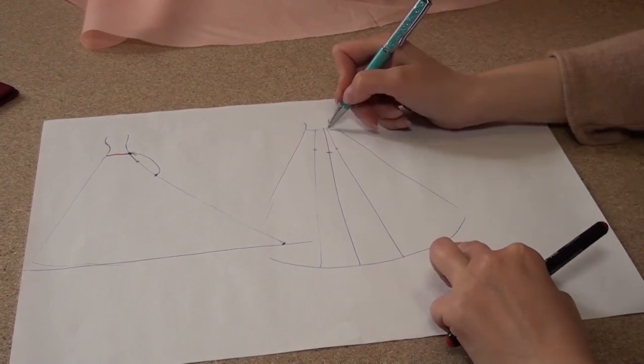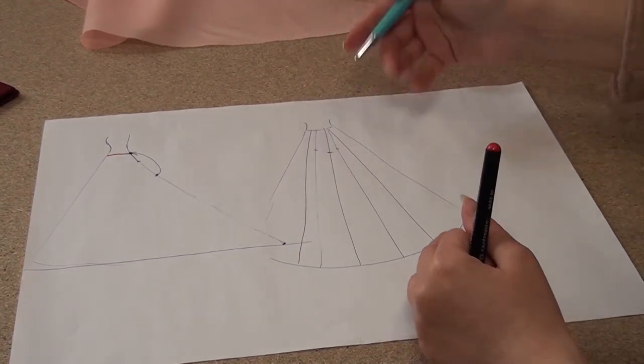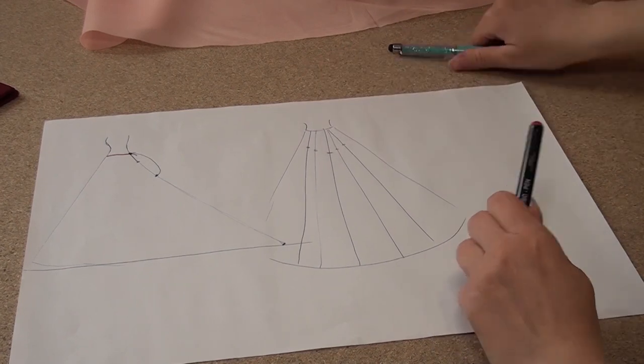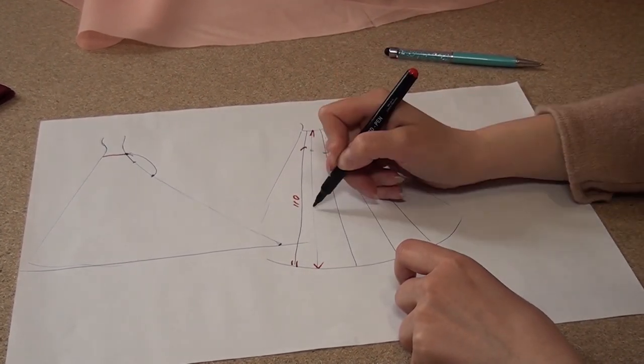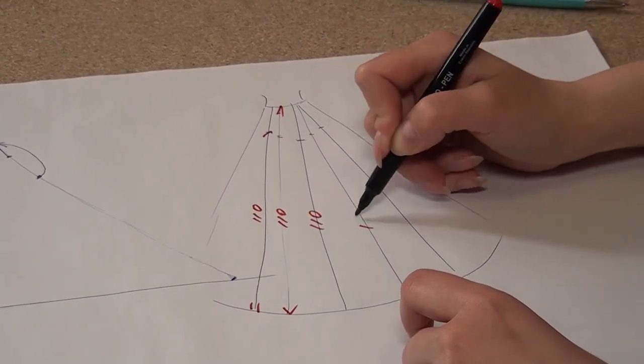For a circle skirt, 5 loops and 5 buttons or even 7 loops and 7 buttons. It depends on the length of the train - more length, more loops and buttons.